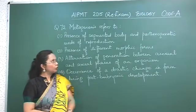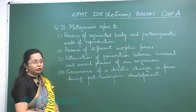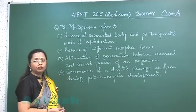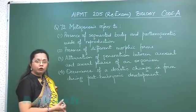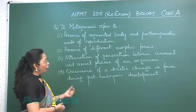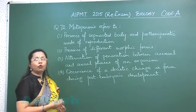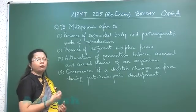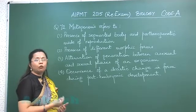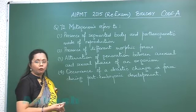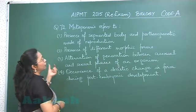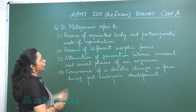Question 72: metagenesis refers to a characteristic feature of some cnidarians belonging to the class Hydrozoa, where the organism exists in more than one form — the polyp and the medusa. The polyp is the asexual form, while the medusa is the sexual form, and there is alternation of generation between them.